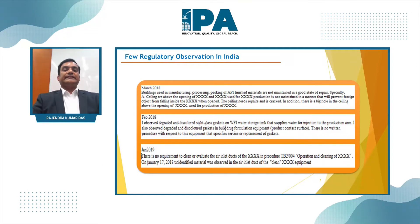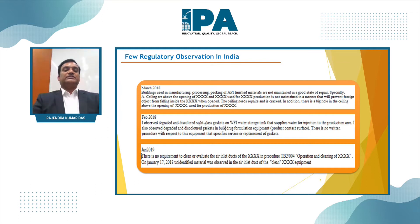Further citations: March 2018 - building used in manufacturing, processing, and packing not maintained in good state of repair, leading to contamination. February 2018 - gasket of a WFI water storage tank not maintained, leading to potential contamination. January 2019 - ductwork not being maintained clean.